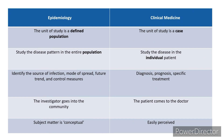The unit of study is a defined population in epidemiology, whereas the unit of study is the case in clinical medicine. In epidemiology we study the disease pattern in the entire population, whereas in clinical medicine we study the disease in the individual patient. In epidemiology we identify the source of infection, mode of spread, future trend, and control measures, whereas in clinical medicine it is diagnosis, prognosis, followed by specific treatment of the individual patient.